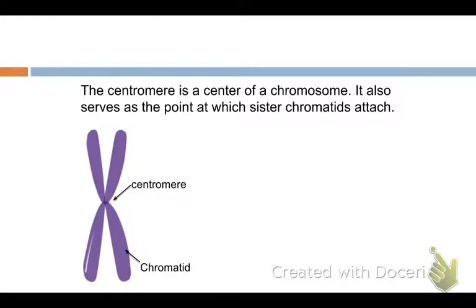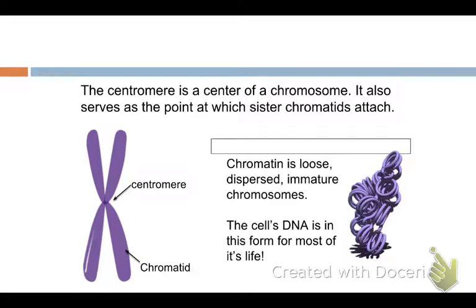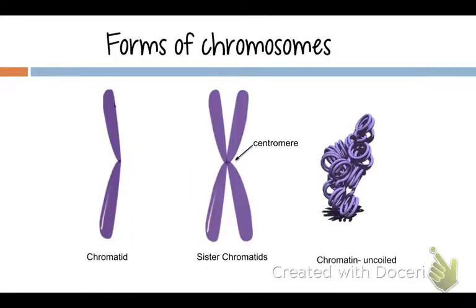The centromere is the point where the chromatids are attached to each other, and when it's uncoiled we call that chromatin. These words — chromatid, chromatids, chromosome, chromatin — you've got to know the difference. Since the chromatids make a chromosome, the one in the center is what we would refer to as a chromosome.